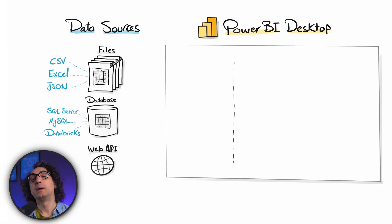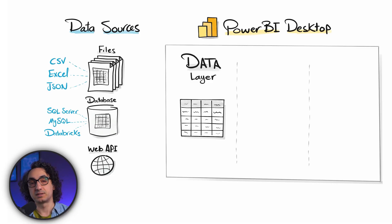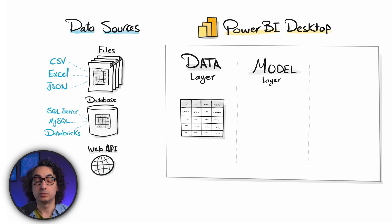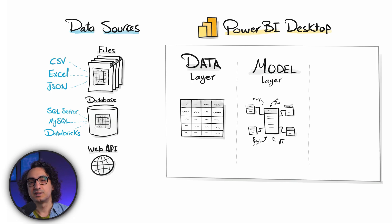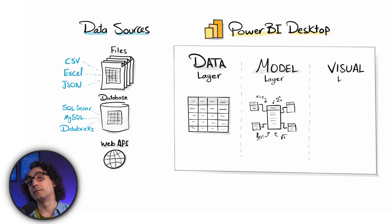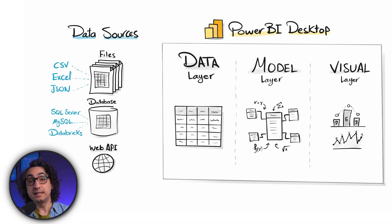Inside Power BI Desktop, we split it into three main parts. The first is the data layer - this is raw data that Power BI brings in from the sources, just like a local copy of your data. The next is the model layer or data model, where you describe and organize your data: tables, columns, relationships, and calculations on top of the data. The last is the visual layer, where you build your reports: charts, tables, slicers, and buttons.